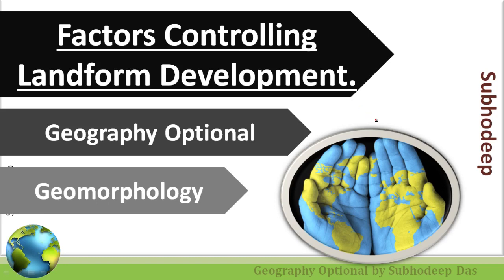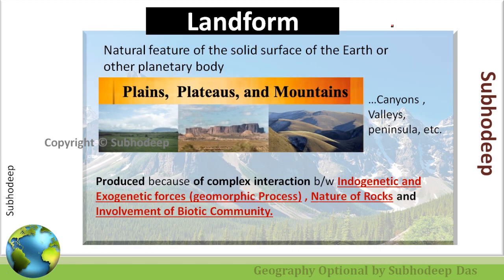Welcome to UPSC 360. In today's class we are going to discuss the next topic of geomorphology, in which we'll be discussing the factors controlling landform development. In the previous class we already read about what a landform is. A landform is basically the natural feature which we observe on the solid surface of the earth and different other planetary bodies. Macroscopically, the landforms we observe on earth are either plains, plateaus, or mountains — these are the second order landforms.